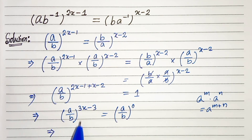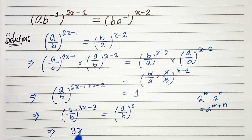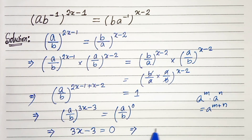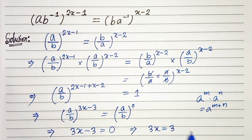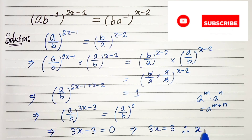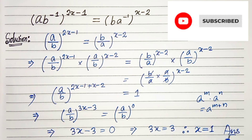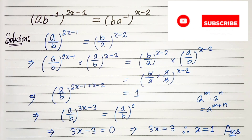Comparing both sides, we can write 3x-3=0, so 3x=3, therefore x=1. This is our solution. Thanks for watching.